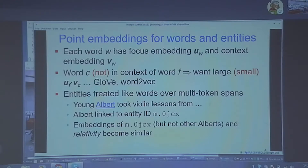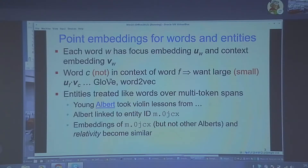If you have text like Wikipedia where some spans of text are linked explicitly to canonical entity IDs, you could start regarding these canonical entity IDs as just special words from another vocabulary. For example, in the sentence 'young Albert took violin lessons from the age of three,' Albert may be hyperlinked to a specific Wikipedia page with a standardized URL that never changes. In the case of Freebase, the unique ID for Albert Einstein the physicist is m.0jcx.